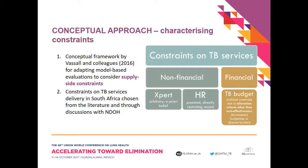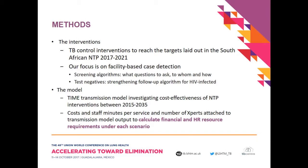We looked at three constraints: a financial constraint characterized as a TB budget; a direct constraint on access to services — specifically availability of human resources to deliver TB services; and a policy constraint on the maximum number of GeneXpert tests that can be performed in a year. The TB control interventions examined are those the Department of Health is considering for the new national TB plan covering 2017–2021, focusing on facility-based case detection. We used a disease transmission model and attached unit costs per service, nurse staff time per service, and number of GeneXpert machines.